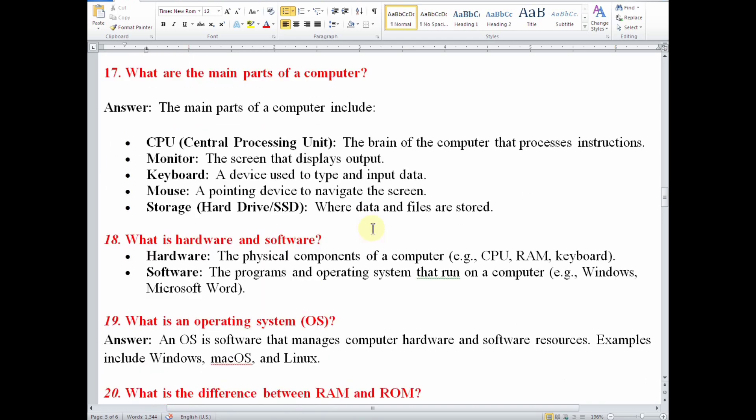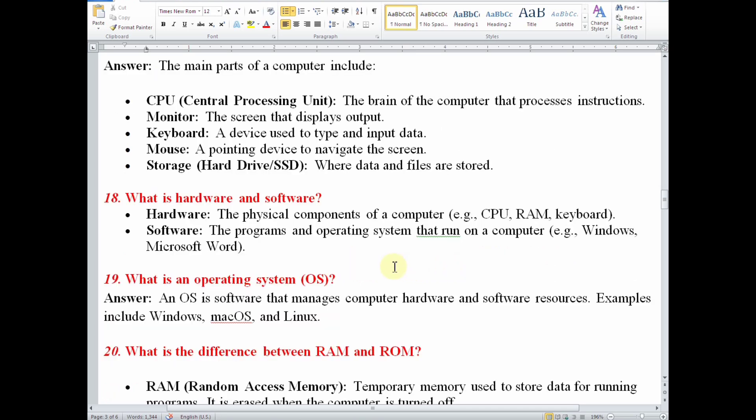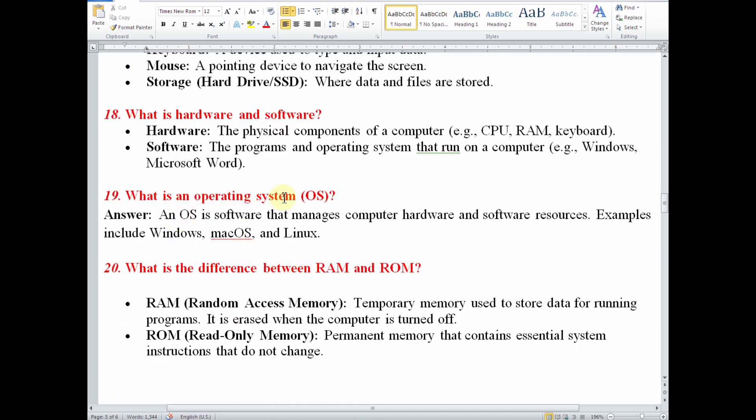Number 18, what is hardware and software? Hardware are the physical parts of the computer or physical components. Examples include CPU, RAM, keyboard, among others. Software are the programs and operating systems that run on a computer, for example Windows, Microsoft Word, etc. We have talked about that one earlier.